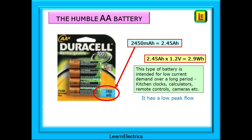Look at the humble AA battery. The ones shown here have a stated capacity of 2,450 milliamp hours. Milli means a thousandth, so divide 2,450 by 1,000 and we have 2.45 amp hours at 1.2 volts — almost 3 watt hours from a tiny battery. It has a low peak flow; the maximum instantaneous load it can service is very small. It is intended for low current demand applications over long periods of time — ideal for kitchen clocks, calculators, TV remote controls, and cameras.